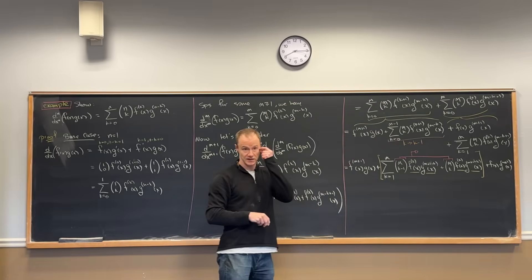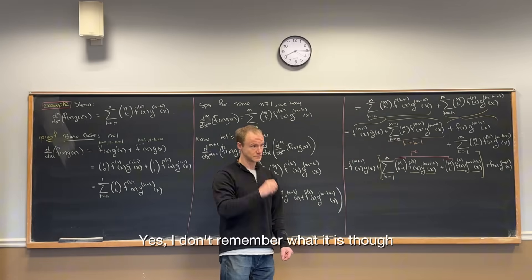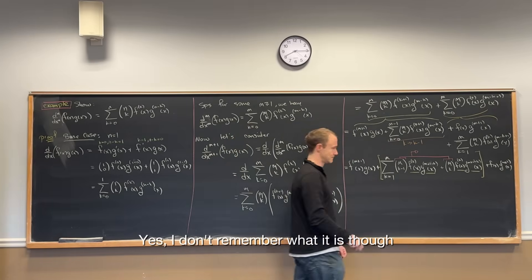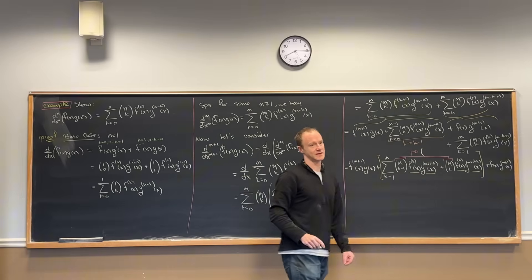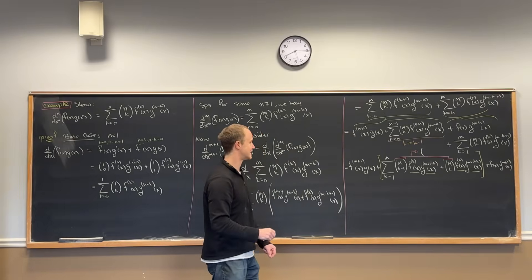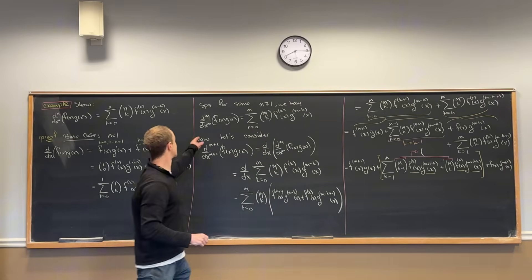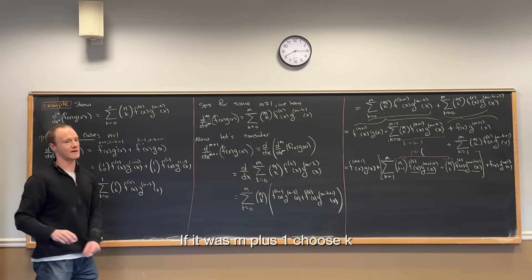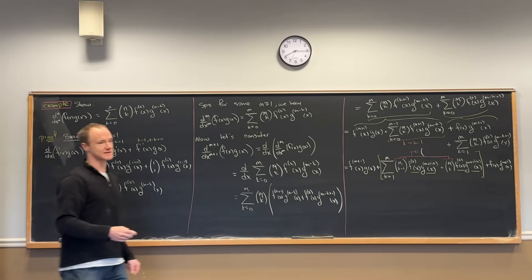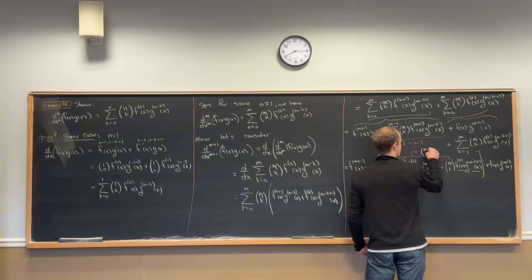Is there an identity that tells us what m choose (k minus 1) plus m choose k is? What would be the best case scenario, keeping in mind the formula we're going for? It would be m plus 1 choose k. And it is — that's Pascal's identity. So m choose (k minus 1) plus m choose k equals m plus 1 choose k.